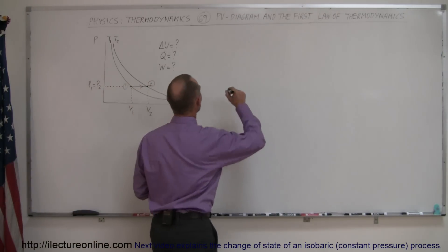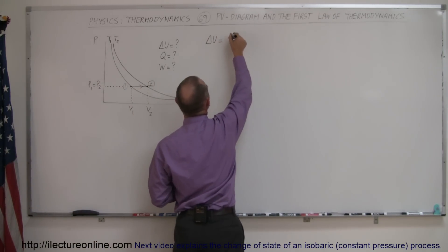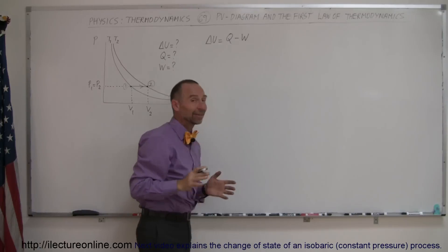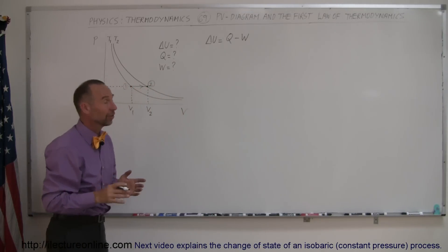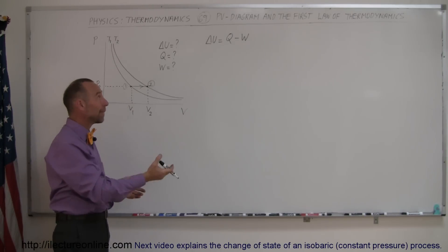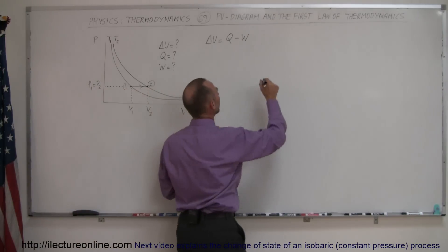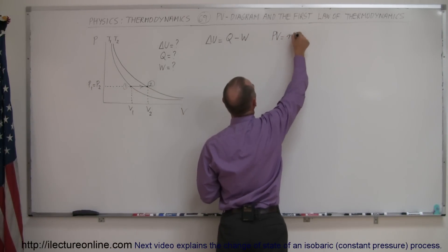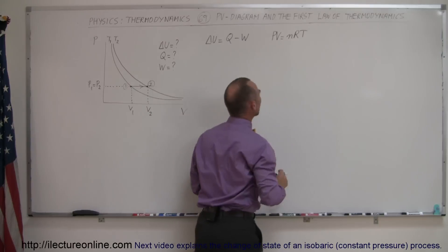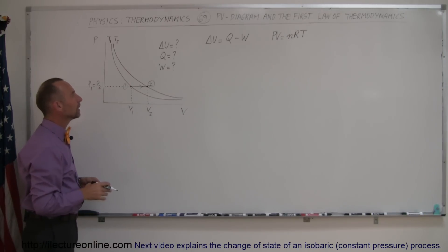So let's write down the first law of thermodynamics. The change in internal energy is equal to the heat added to the gas minus the work done by the gas. And again it's very important to say that sentence. The change in internal energy of the gas is equal to the heat added to the gas minus the work done by the gas. And it never hurts to write down the equation PV equals nRT, which is the equation of state for the state variables of the gas.